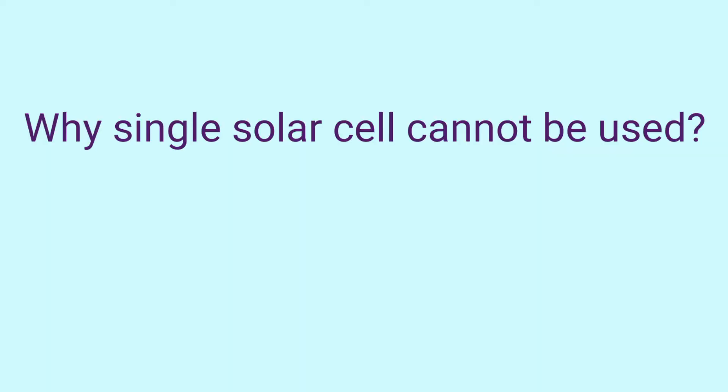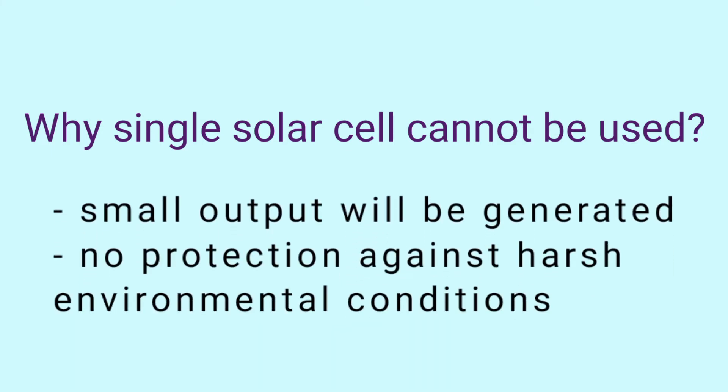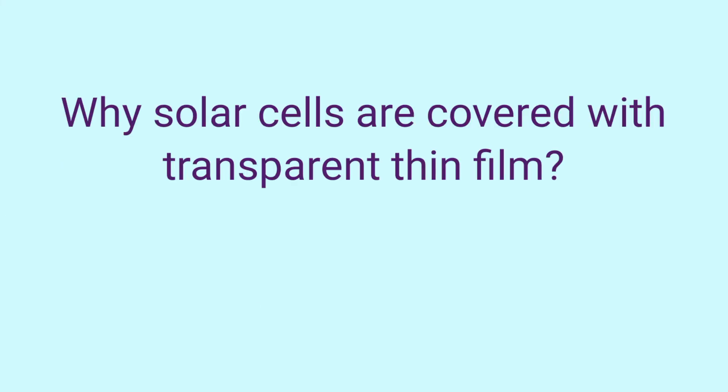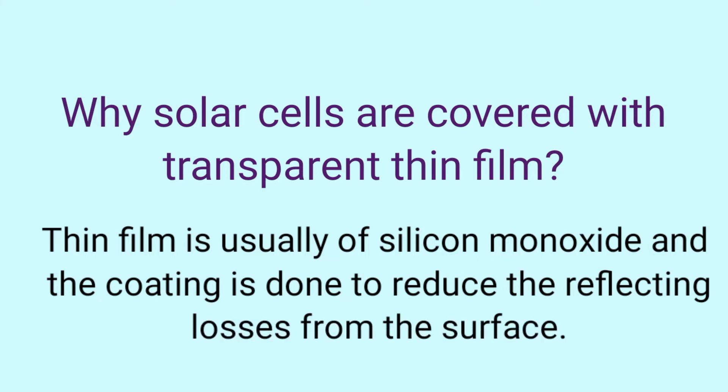Why can a single solar cell not be used? If we use a single solar cell, a very small amount of output will be generated and there won't be any protection against environmental conditions. For making a solar cell, what is the preferred value of band gap? It is 1.5 electron volt. Why are solar cells covered with a transparent thin film? The thin film is usually of silicon monoxide and the coating is done to reduce reflective losses from the surface.